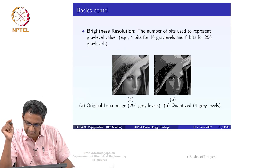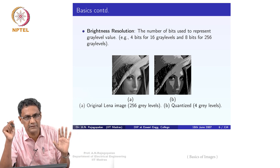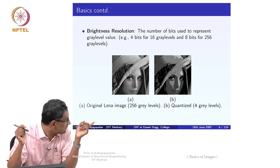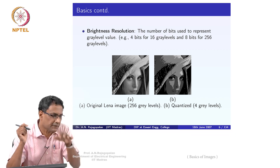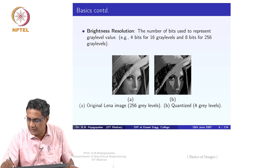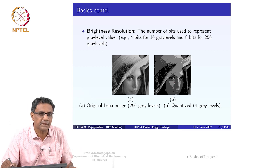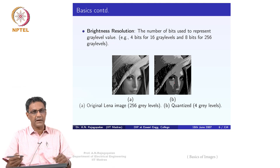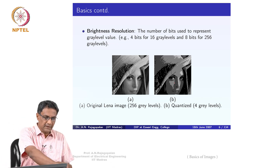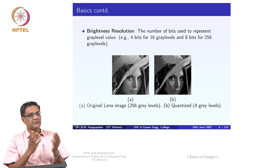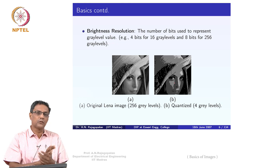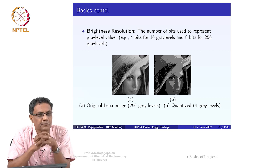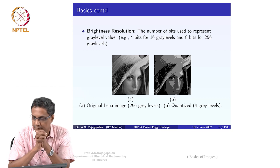Here is a case where on the left we have used about 256 gray levels. In the second image, what you see is called false contouring — the face appears to have contours that are not actually there. So if you keep decreasing the number of bits, it may not be alright, because when somebody looks at the picture, they start drawing wrong inferences.